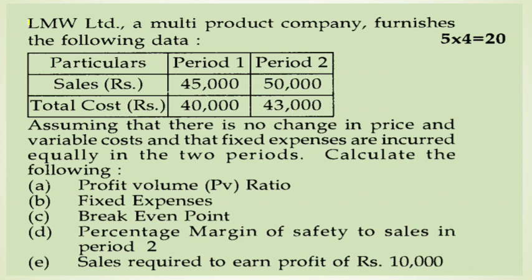The question is: LMW Limited is a multi-product company that furnishes the following data. The data has two columns — sales and total cost. In Period 1, sales are ₹45,000 and total cost is ₹40,000. In Period 2, sales are ₹50,000 and total cost is ₹43,000.